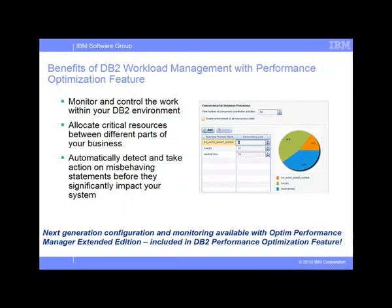The DB2 performance optimization feature provides the infrastructure, configuration, and monitoring capabilities to help you manage your database work. It helps you manage conflicting demands on available resources. An example, as we saw with the Great Outdoors team, is being able to keep short transactional queries in a warehouse environment executing at a consistent and predictable pace. You can also automatically detect activities that exceed threshold limits and optionally stop the activity before it seriously impacts the rest of the system.